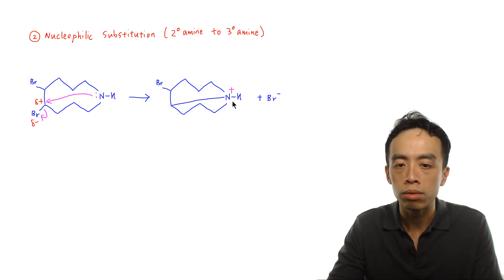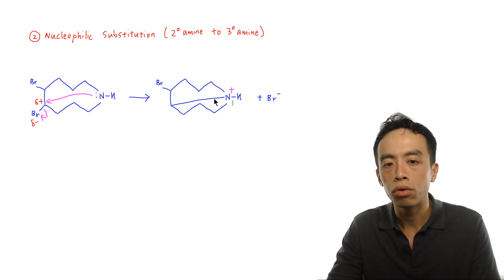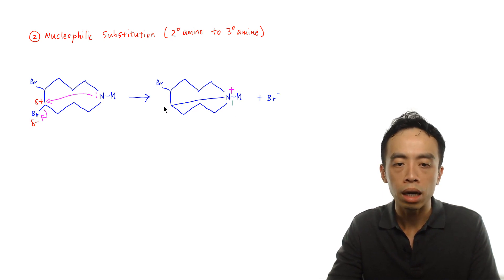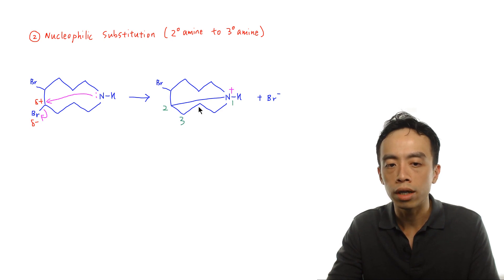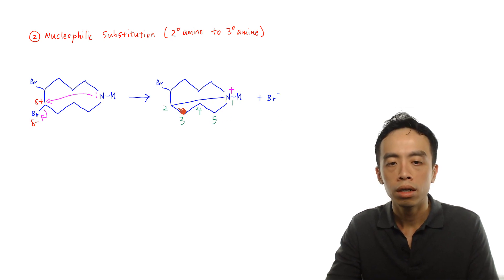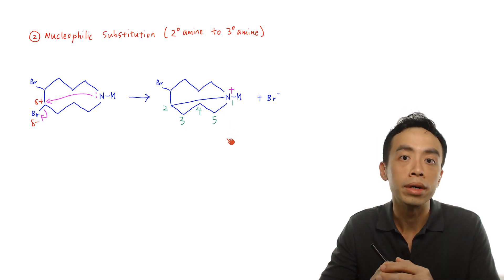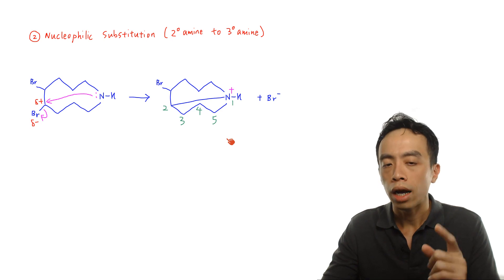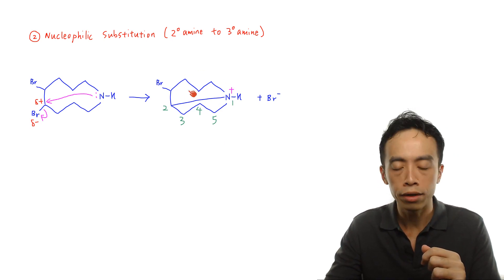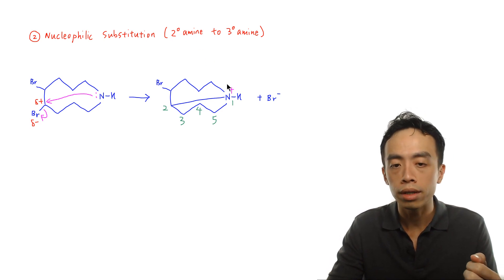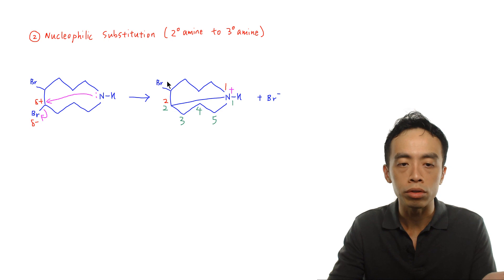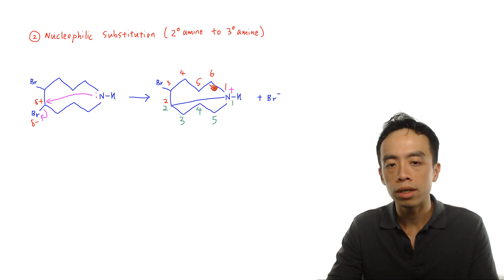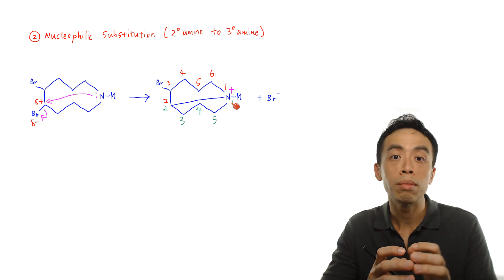Let me number nitrogen as position 1 and consider the cyclocompound at the bottom first. Nitrogen is position 1, then carbon position 2, carbon position 3, carbon position 4, carbon position 5 — and that loops back to position 1. So the bottom cyclocompound is a 5-member ring (a pentagon). For the top cyclocompound: nitrogen is position 1, carbon position 2, the carbon with the bromo group is position 3, then positions 4, 5, and 6 — which loops back to nitrogen. So the top is a 6-member ring.